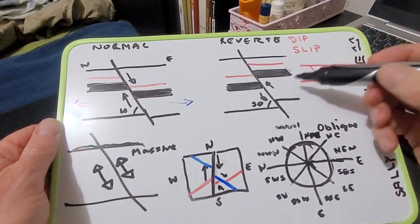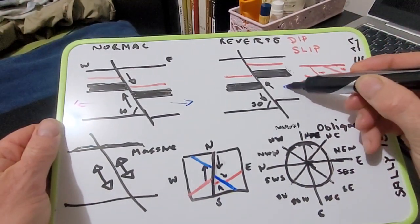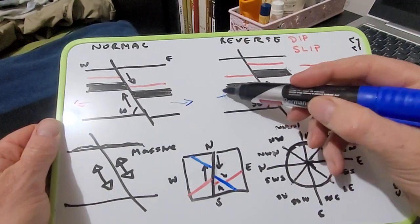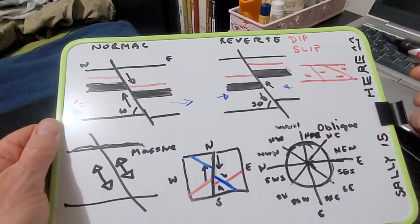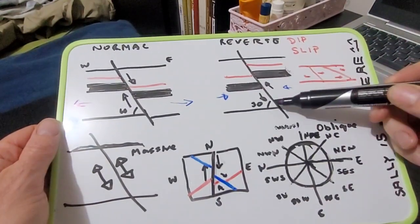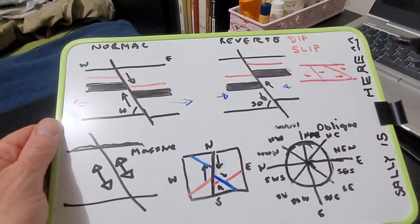A reverse fault is where the two sides are coming together. So they're being pushed together, squeezed together by a convergent plate boundary. And the angle is usually 30 degrees.